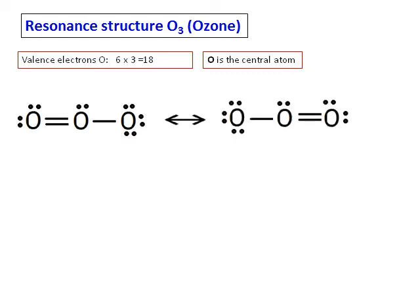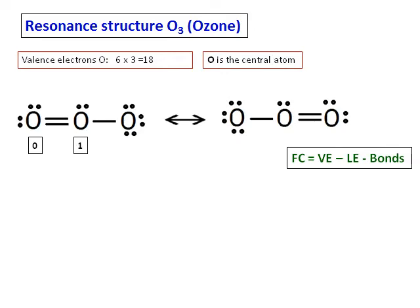You can see that the octet of all the oxygens are complete, each having 8 electrons around it. Let's calculate the formal charge using the formula given. The molecule as a whole is neutral with one oxygen having a positive one charge and another having a negative one charge.